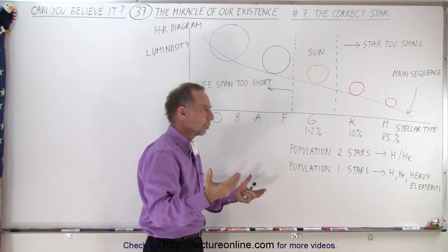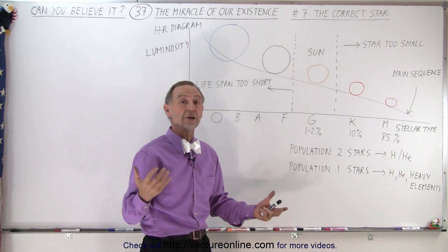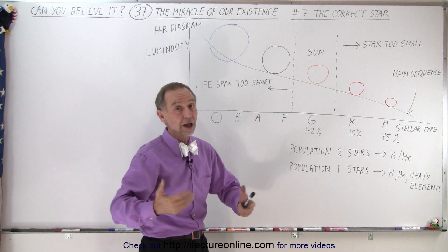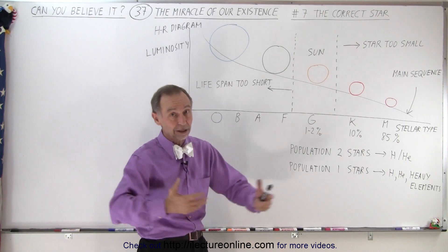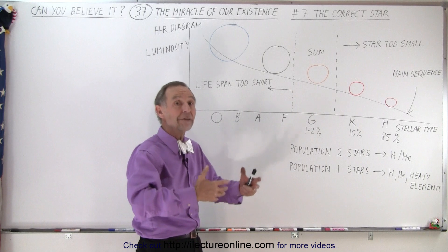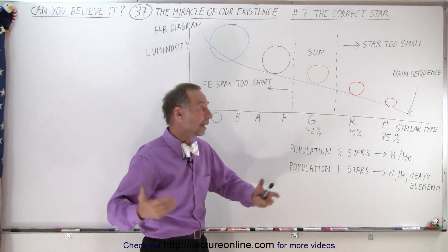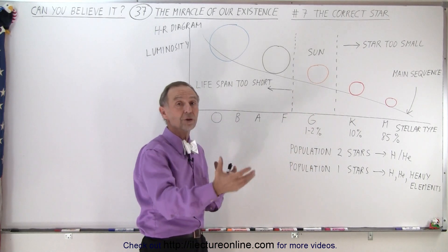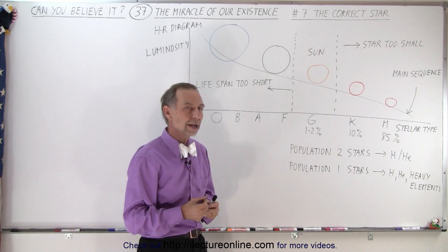So for example, a day on Mercury lasts for well over 100 days, and you can imagine how hot it would be during the daytime for that long period of time. And then at nighttime, you'd have 100 plus day nighttime, and then you would have enormously cold temperatures for a very long period of time.